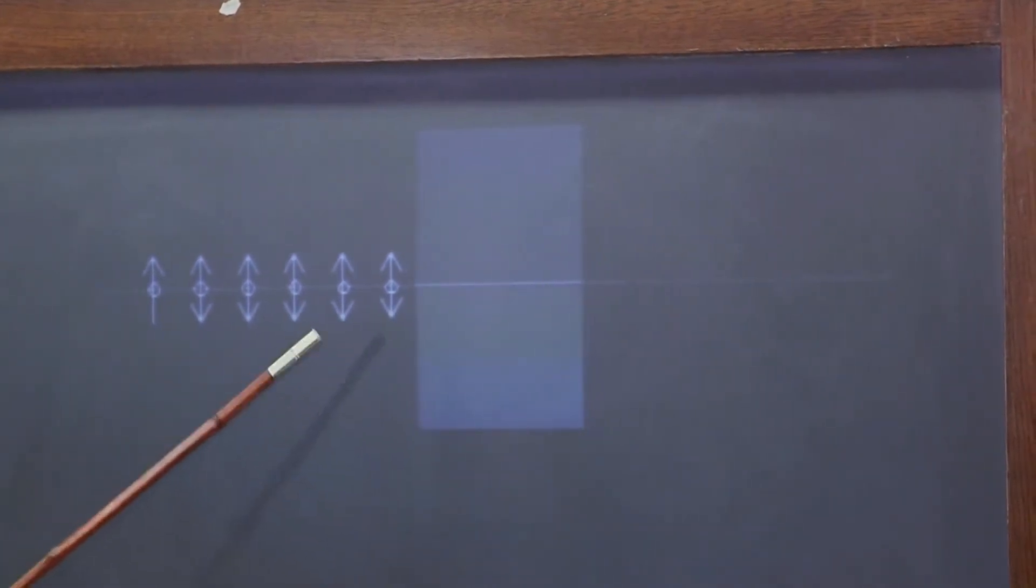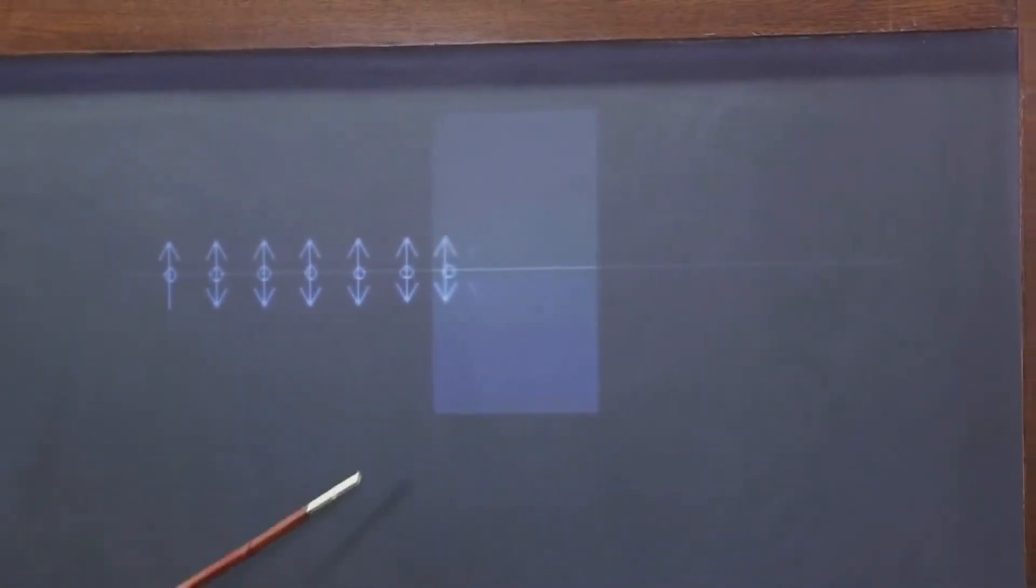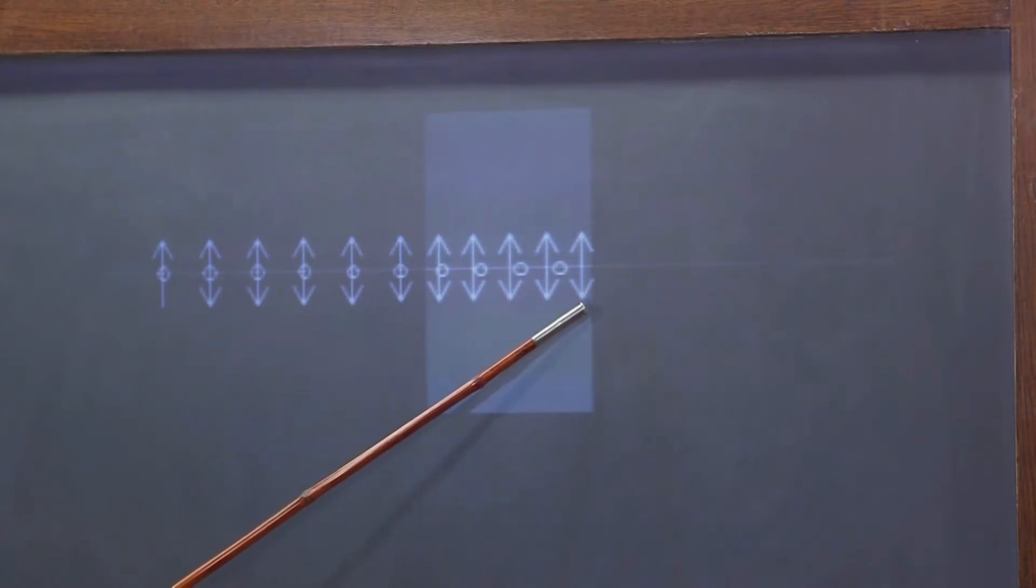But when they hit this material, they're going to slow down and they're going to go different speeds because it's birefringent. In this case, I have the horizontal going a little faster and the vertical lagging it a little bit. When they come out, they'll be the same speed again, and now you can see what we've done is we've introduced a phase shift.